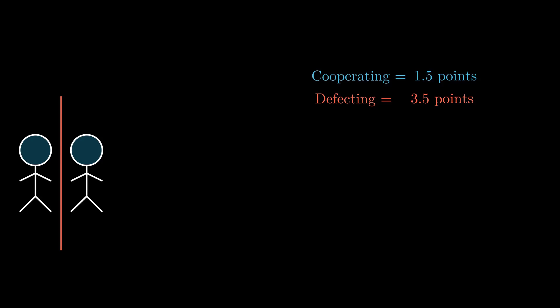So through individual lenses, defecting seems to be the best option for each prisoner. That's what the dilemma is all about. While you'd want to maximize group rewards, you also have individual concerns. Isn't that beautiful?